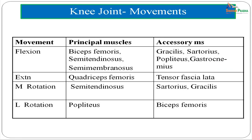The principal muscles causing flexion are the hamstrings: biceps femoris, semitendinosus, and semimembranosus. Accessory flexors include gracilis, sartorius, popliteus, gastrocnemius, and the ham part of adductor magnus. The main extensors are quadriceps femoris assisted by tensor fascia latae. Medial rotation is accomplished by semitendinosus assisted by sartorius and gracilis. Lateral rotation is principally caused by popliteus, with biceps femoris also assisting.